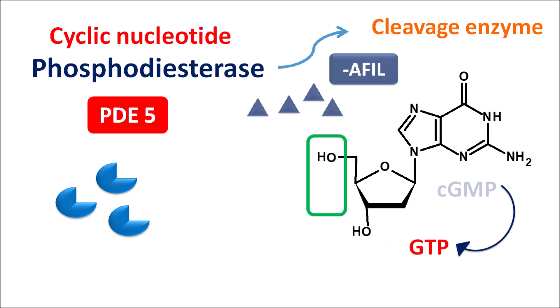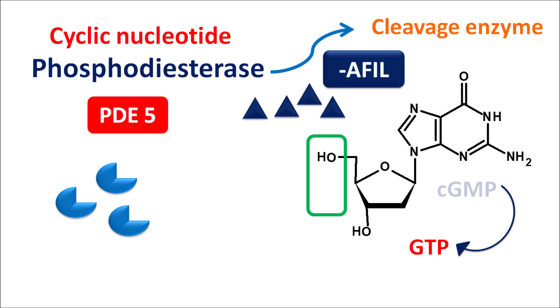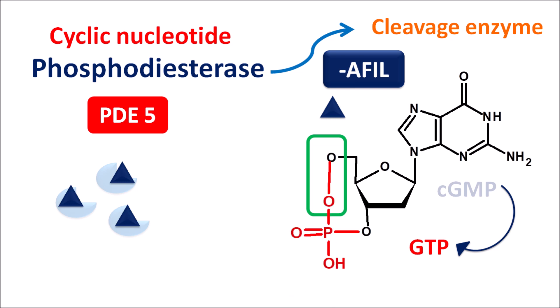Drugs with the suffix '-afil', the PDE5 inhibitors, act on the PDE5 enzyme and inhibit its activity, resulting in decreased cleavage of cyclic GMP. Therefore, cyclic GMP levels are increased. As cyclic GMP levels increase, they increase relaxation of the corpus cavernosum and vasodilatation within the tissue, resulting in increased erection — that is why these drugs are used in erectile dysfunction. They also produce systemic vasodilatation and reduce pulmonary blood pressure, so sildenafil can be used in pulmonary hypertension.